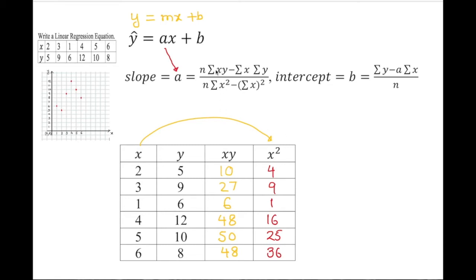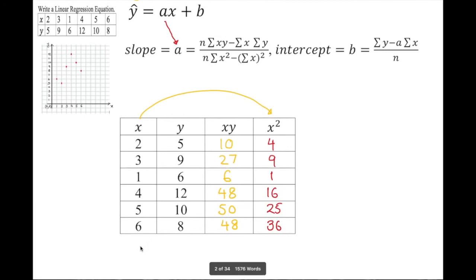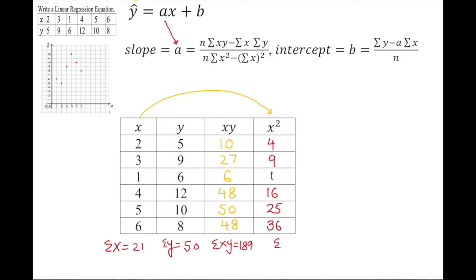Almost all of these have a summation, so we need to add all the columns. Sum of x gives 21, sum of y gives 50, sum of xy gives 189, and sum of x-squared gives 91. That's all the information we need to find the slope and y-intercept.